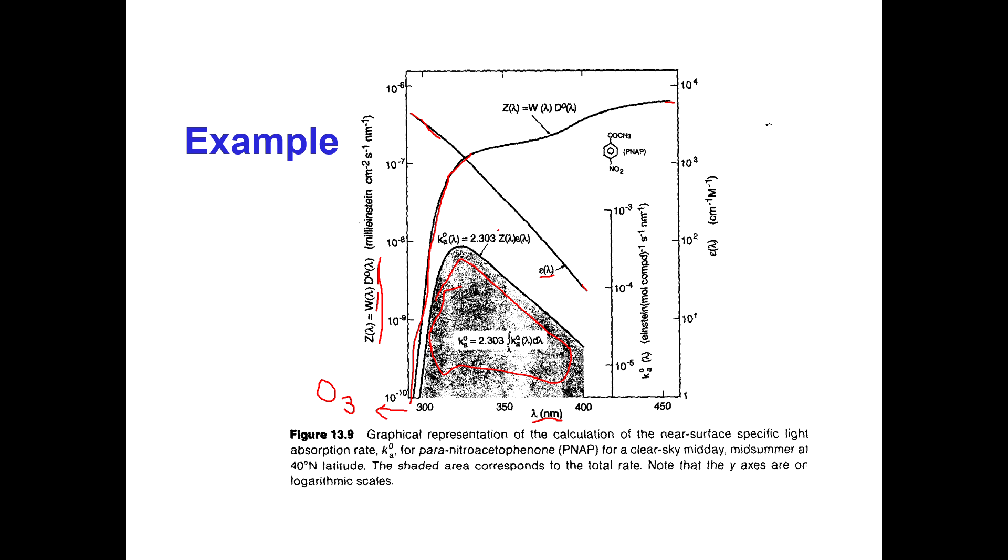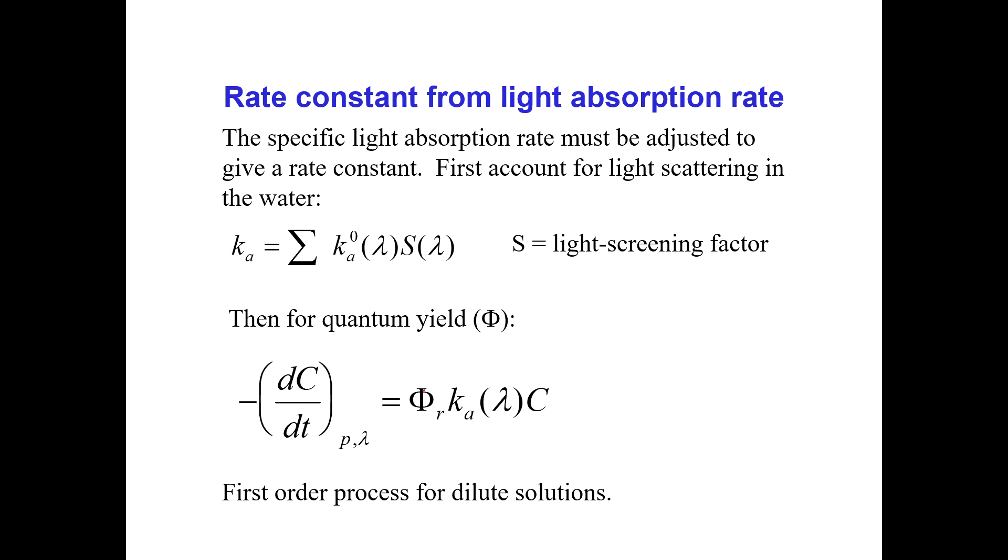And the 2.303 here is just a conversion factor to convert natural logs to base 10 logs. Don't worry about that. So the point is that your chemical can absorb great down here at these lower wavelengths, but there's none of that light around. So that doesn't matter. It doesn't matter how well it absorbs below 290 nanometers because that sunlight is not hitting near the surface. It doesn't absorb really all that well over here at 400 nanometers, but that's the light that's available. So the amount of sunlight that's actually absorbed by your chemical is in this black area.